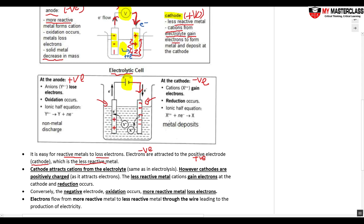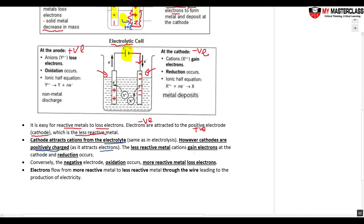Cathode attracts cations from the electrolyte. However, cathodes are positively charged because they attract electrons — they are the less reactive metal and they gain the electrons, and reduction occurs. On the reverse side, the negative electrode — oxidation occurs — and this is the more reactive metal, as they tend to lose electrons, and it is the anode, because an ox. Oxidation is loss. Electrons flow from the more reactive to the less reactive metal through the wire and produce electricity. That's how we have our simple cell.